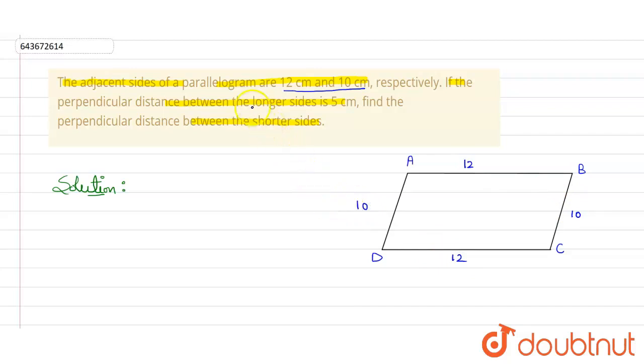Now, it is also given that perpendicular distance between the longer side is 5 cm. So what is the longer side? This one, this AB and CD, this is the longer side. So perpendicular distance between these longer sides is given here, which is 5 cm. So this will be my 5 cm. It is given to us in the question.